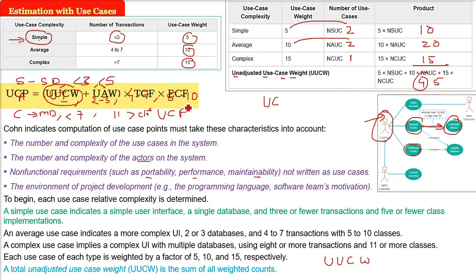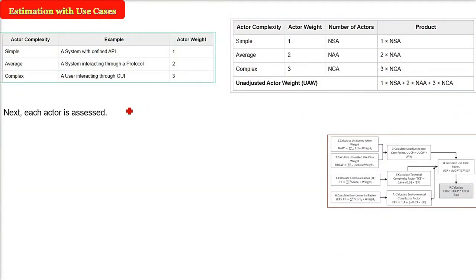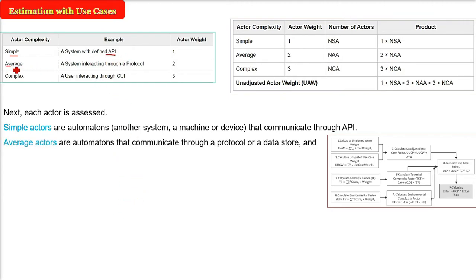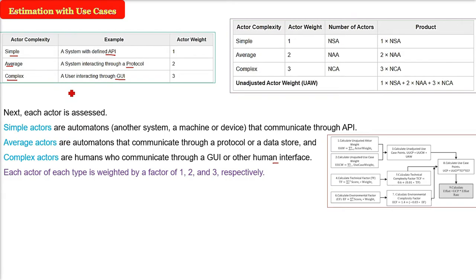Next, we assess the actors. What is the actor complexity? A simple actor is a system interacting with API, another system, machine, or device that communicates through an application programming interface. An average actor is a system interacting through a protocol like TCP, IP, UDP, or a data store. A complex actor is a human or humans who communicate through GUI or other human interface.